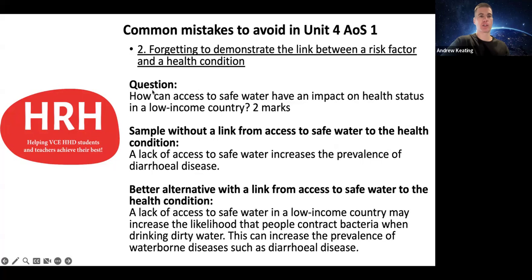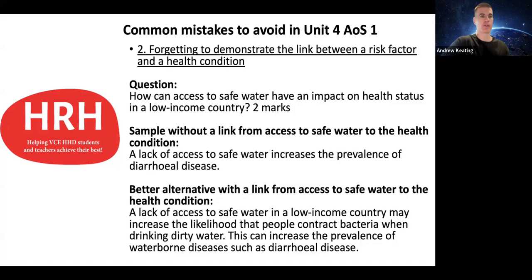For example, the question might be: 'How can access to safe water impact on health status in a low-income country?' worth two marks. A sample answer without the link might just say: 'A lack of access to safe water increases the prevalence of diarrheal disease.' A better alternative would say: 'A lack of access to safe water in a low-income country might increase the likelihood that people contract bacteria from drinking dirty water, and that can therefore increase the prevalence of waterborne diseases such as diarrheal disease.' That link about bacteria and dirty water shows how a lack of safe water connects to diarrheal disease, and using the term 'prevalence' ensures you include the health status terminology.